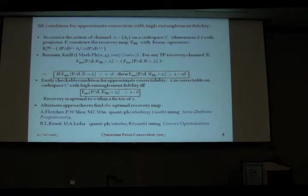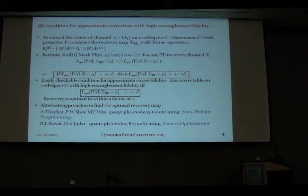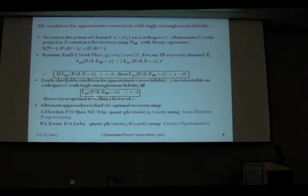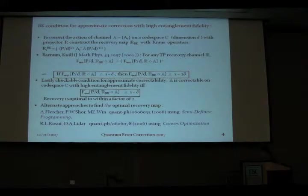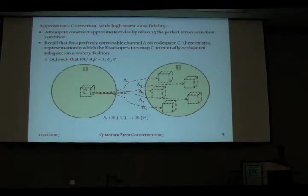The question we are actually interested in is how to recover with high worst-case fidelity. It is tempting to just use the Barnum-Knill recovery, which seems to do so well for the entanglement fidelity. But right now, the bounds we have are not very good with this recovery. It may still be possible that the Barnum-Knill recovery does at least close to optimal, as it does for entanglement fidelity. The approach we took was different: we asked whether it is possible to get approximate codes by just relaxing the perfect error correction condition.